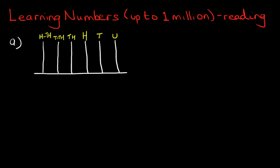Now we're going to draw some disks on each of the columns. Whilst I do this, you have to figure out what is the number that I am drawing. You will see this quite often in your class, in worksheets, in books — this is just good practice. We have now put disks on the various columns; we have to now work out what number the abacus represents and how we say it.